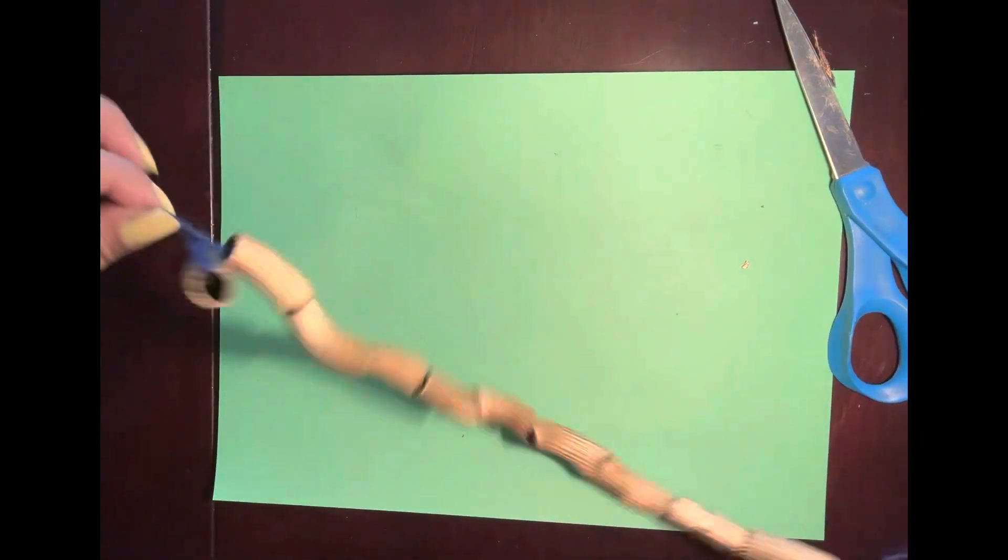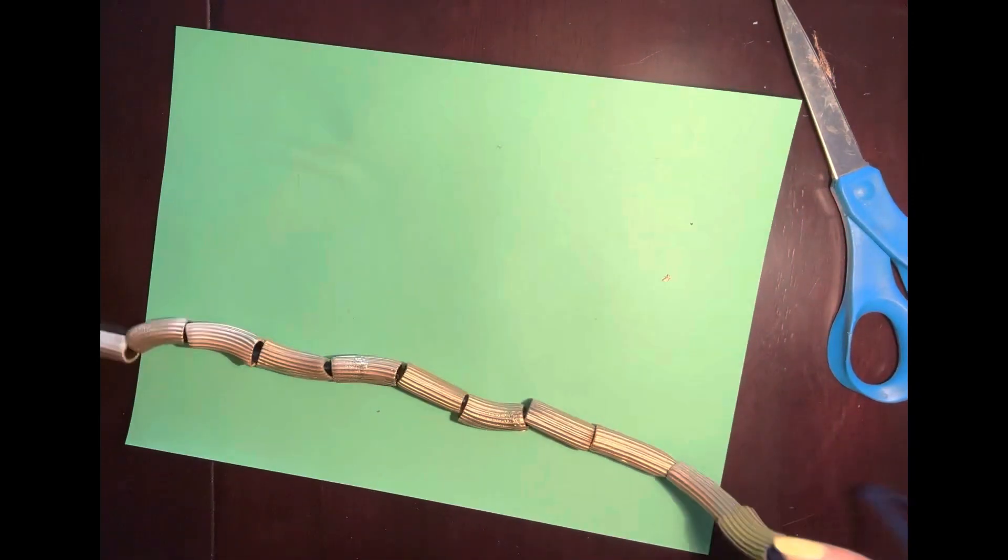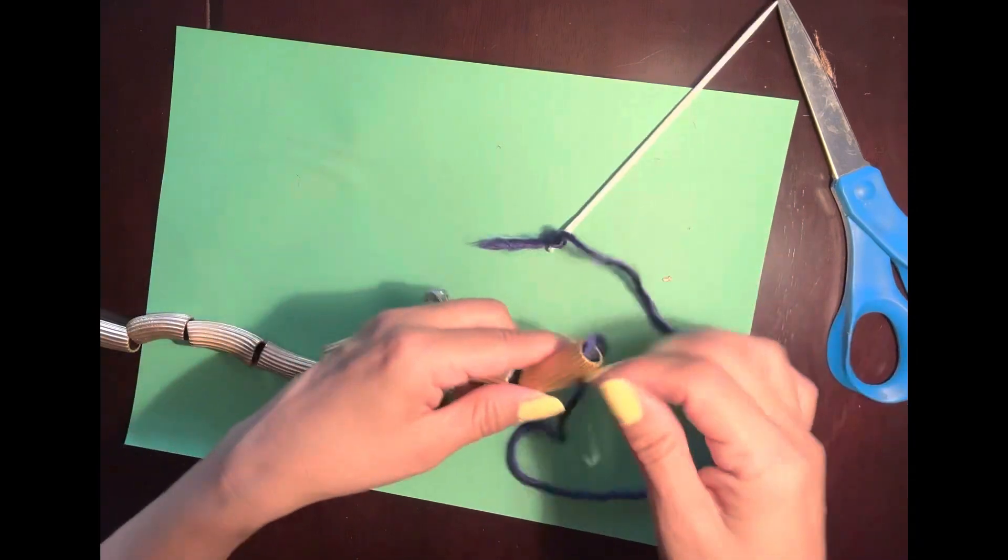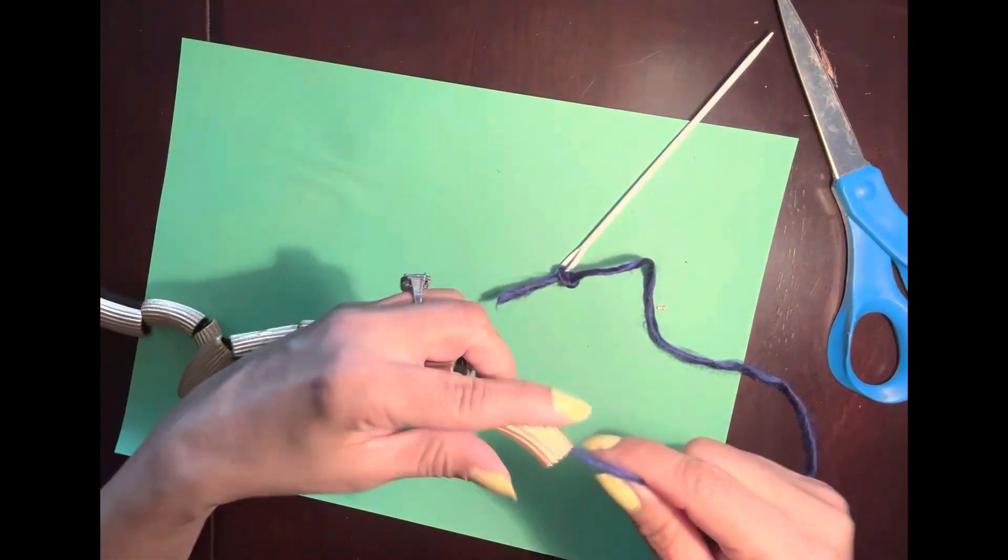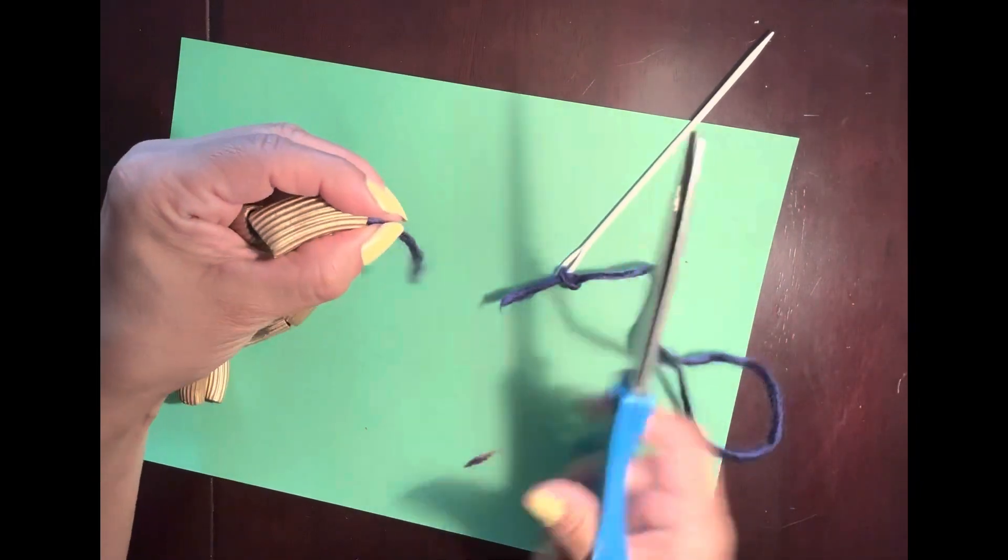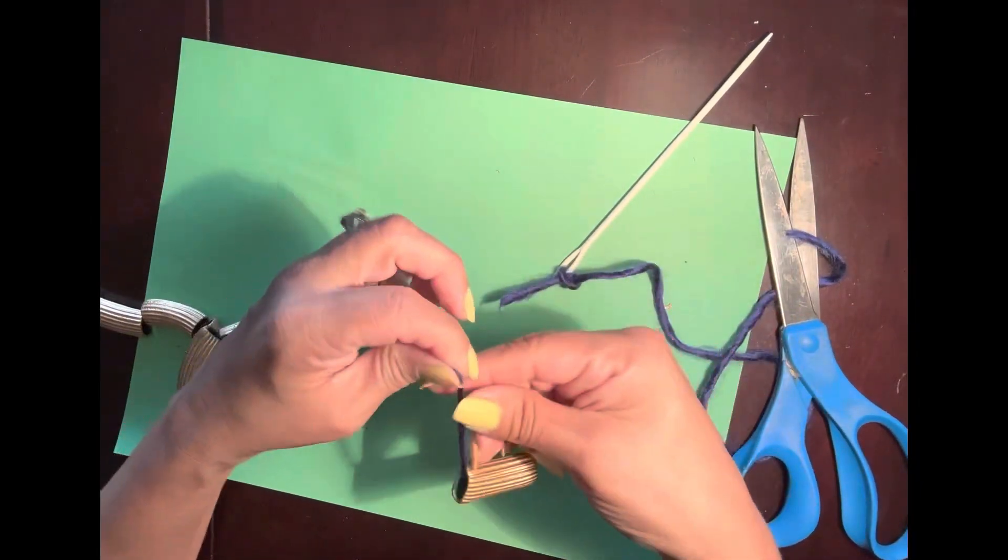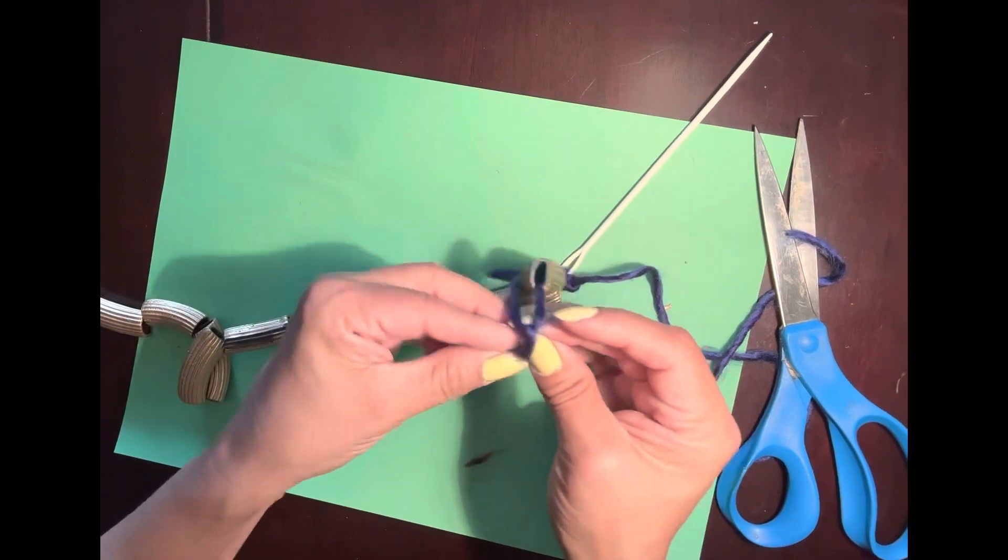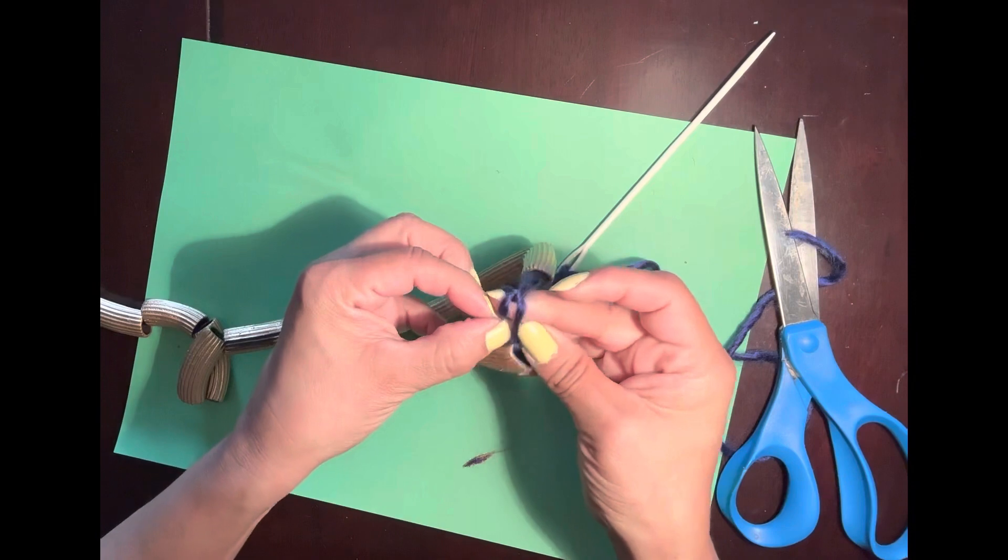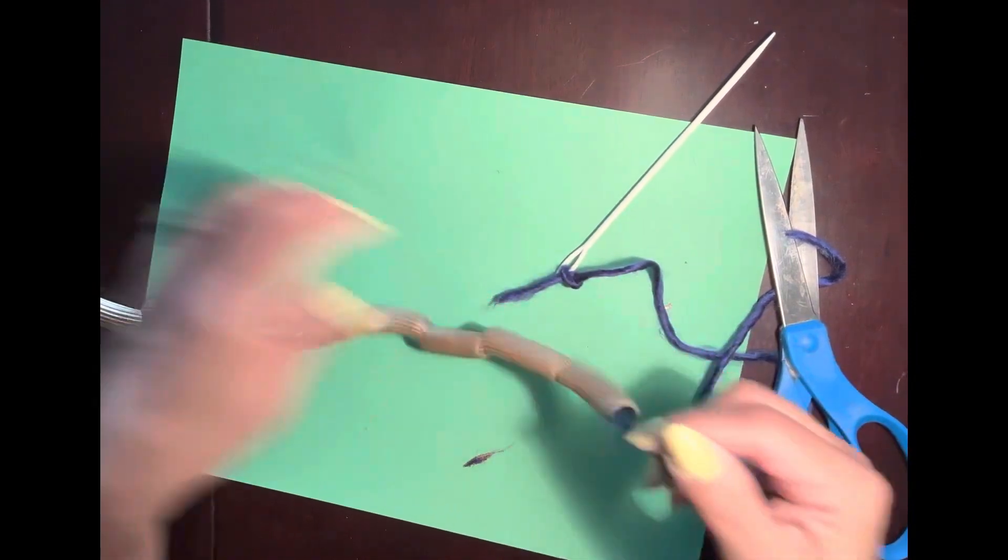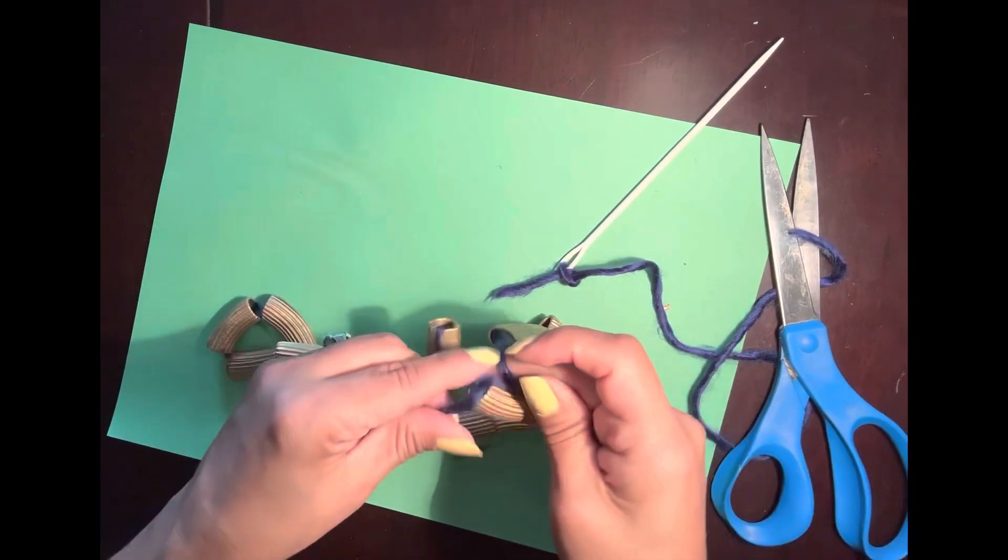All right, I'm going to get the last one just like I did the first one. And I'm going to cut and then tie this last one just like I did the first one so that nothing falls apart. Okay, then I'm going to tie these together.